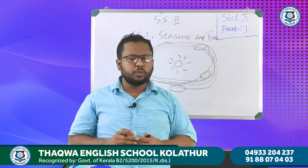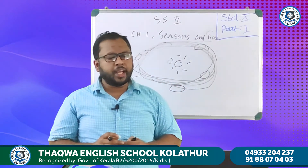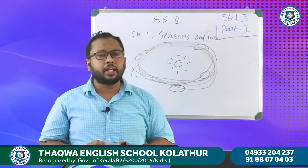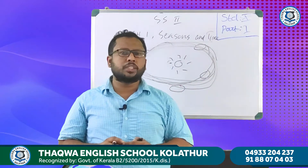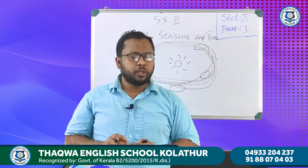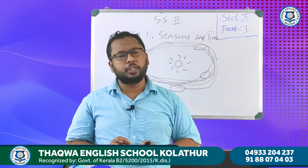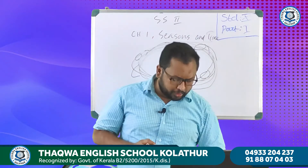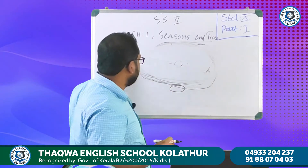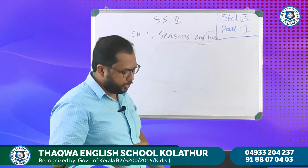The axis of the earth is tilted at an angle of 66 and a half degrees from the orbital plane.